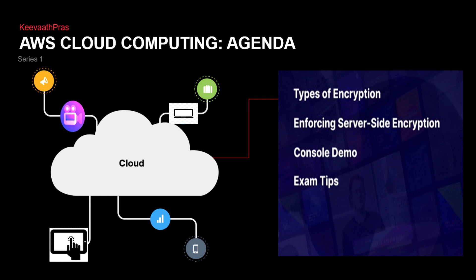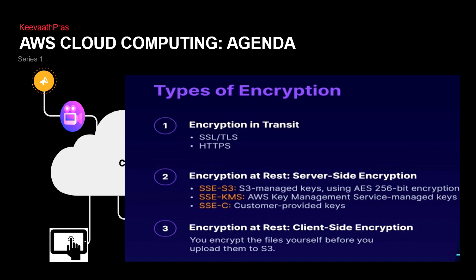We are going to see the different kinds of encryptions, what enforcing server-side encryption means, a console demo, and exam tips which can come up in the Solutions Architect exam. Encryption is basically: there's encryption in transit, which is where data is moving; encryption at rest; and client-side encryption. Encryption in transit is all web-based stuff — SSL, TLS, and HTTPS.